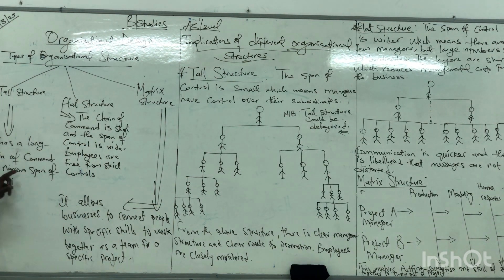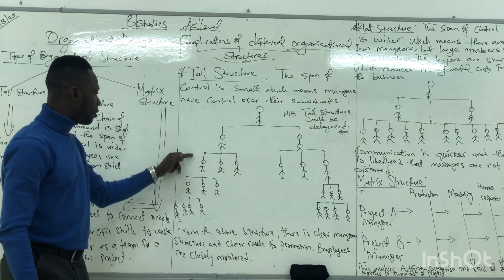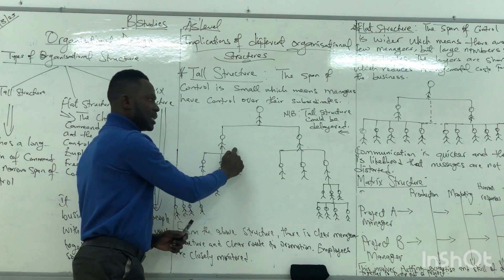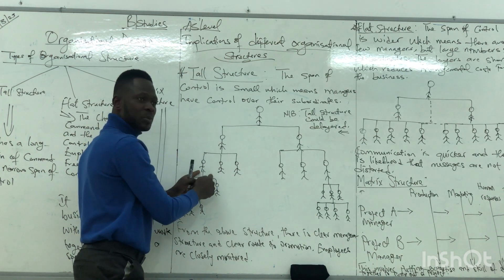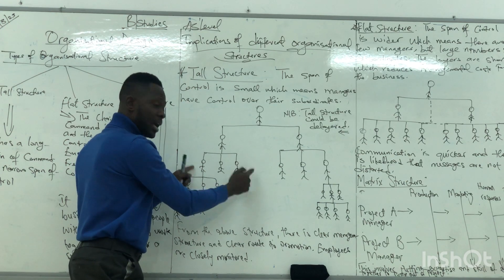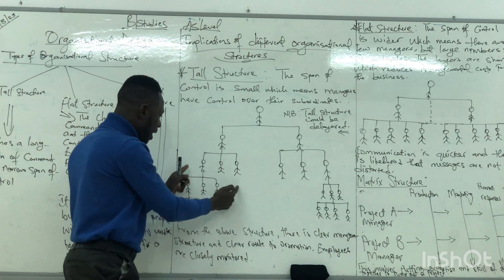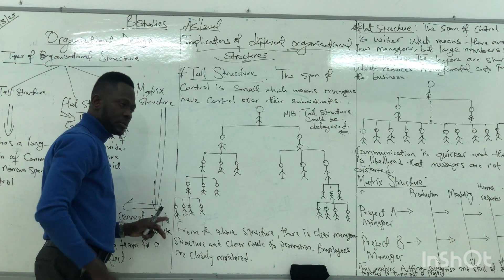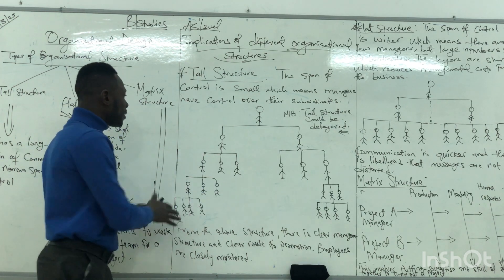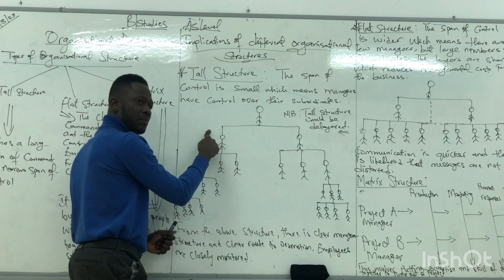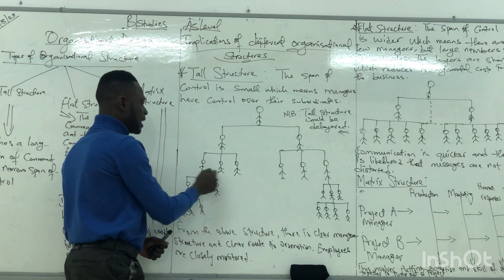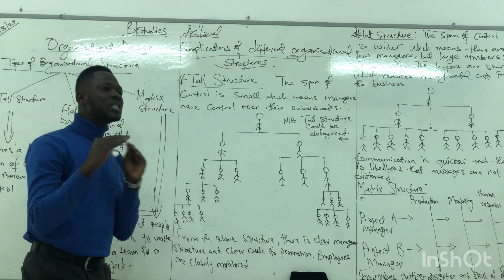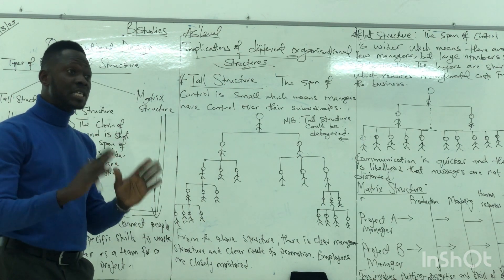It has a long chain of command and a narrow span of control. We are talking about the levels of hierarchy within the organization — it is known that this person has a higher level of authority than this person, and these people have a higher level of authority than those below them. The span of control is the number of people under each manager — for example, one, two, three people under each manager. This is what we call hierarchy, because it has different levels of authority passing across the organization.